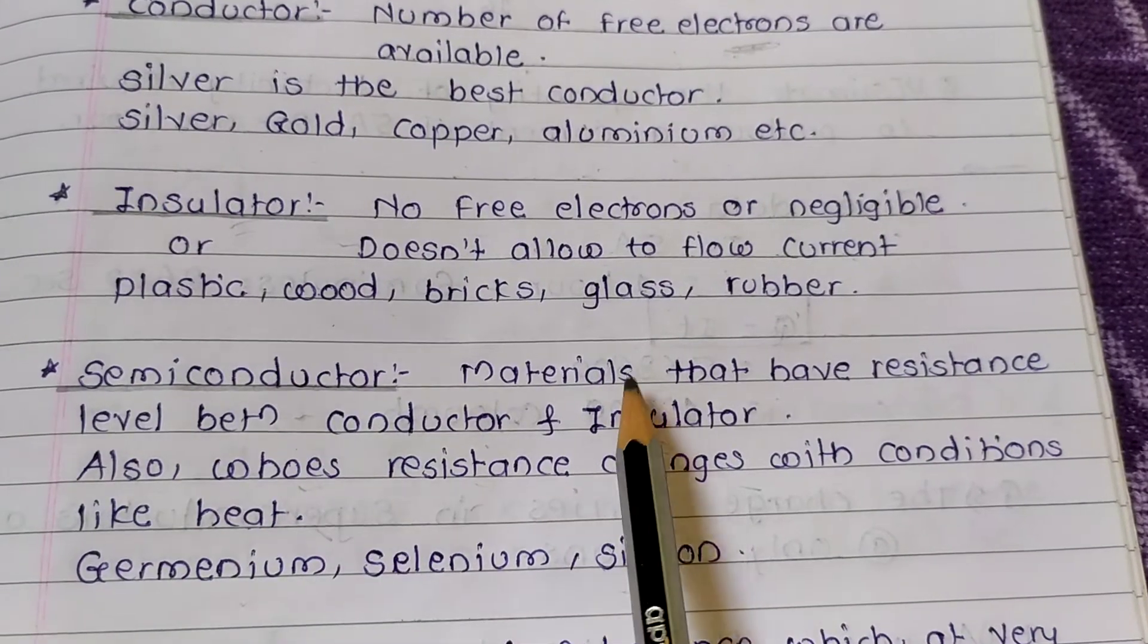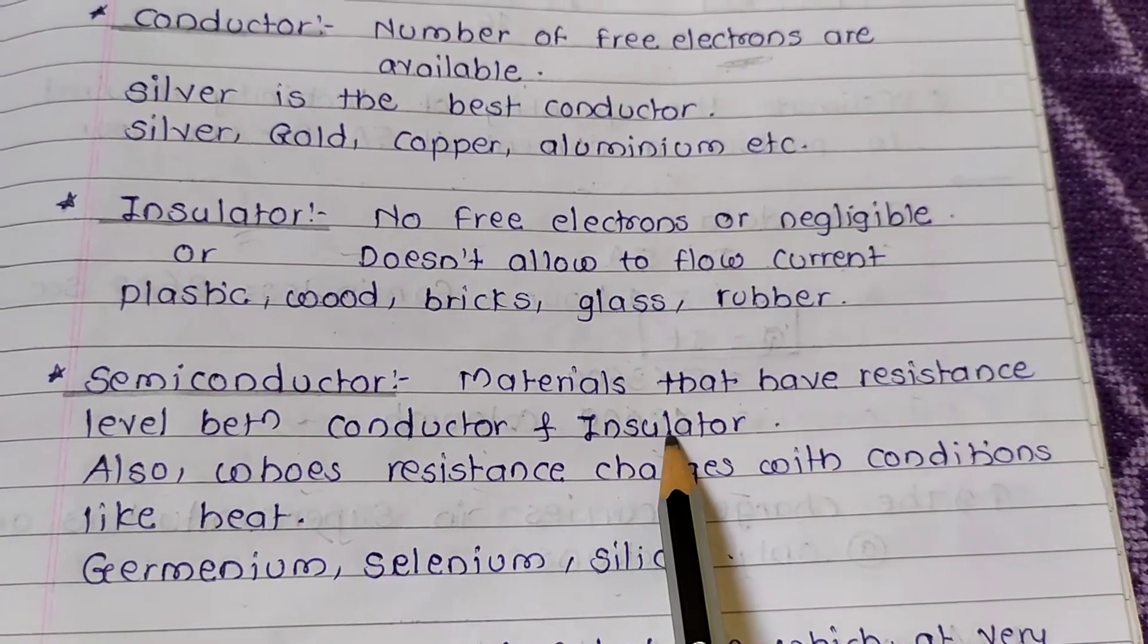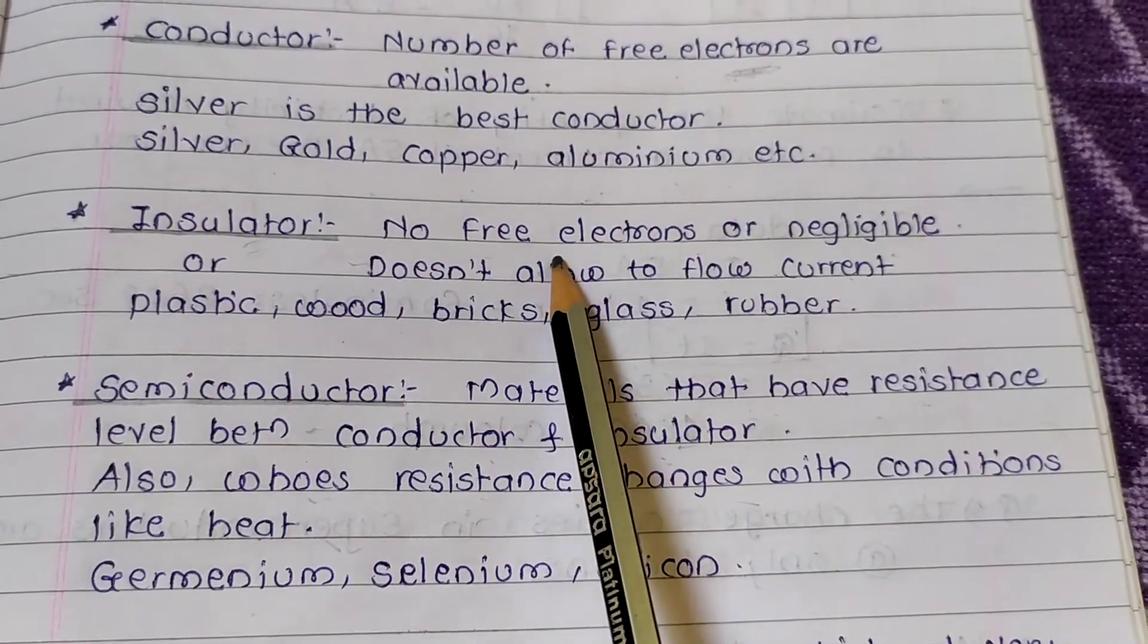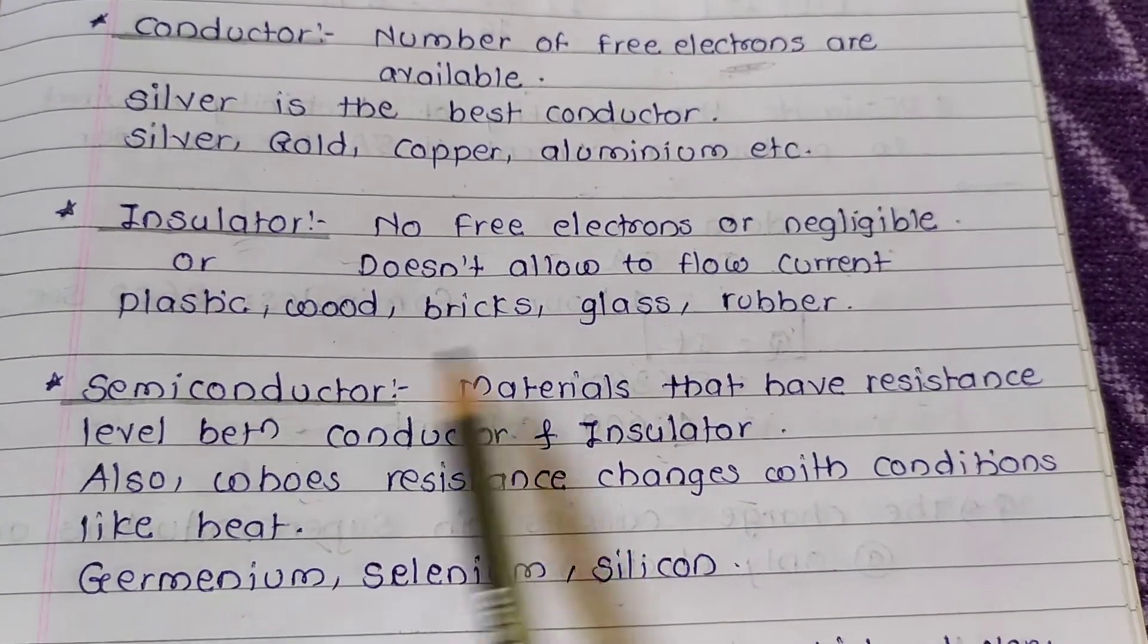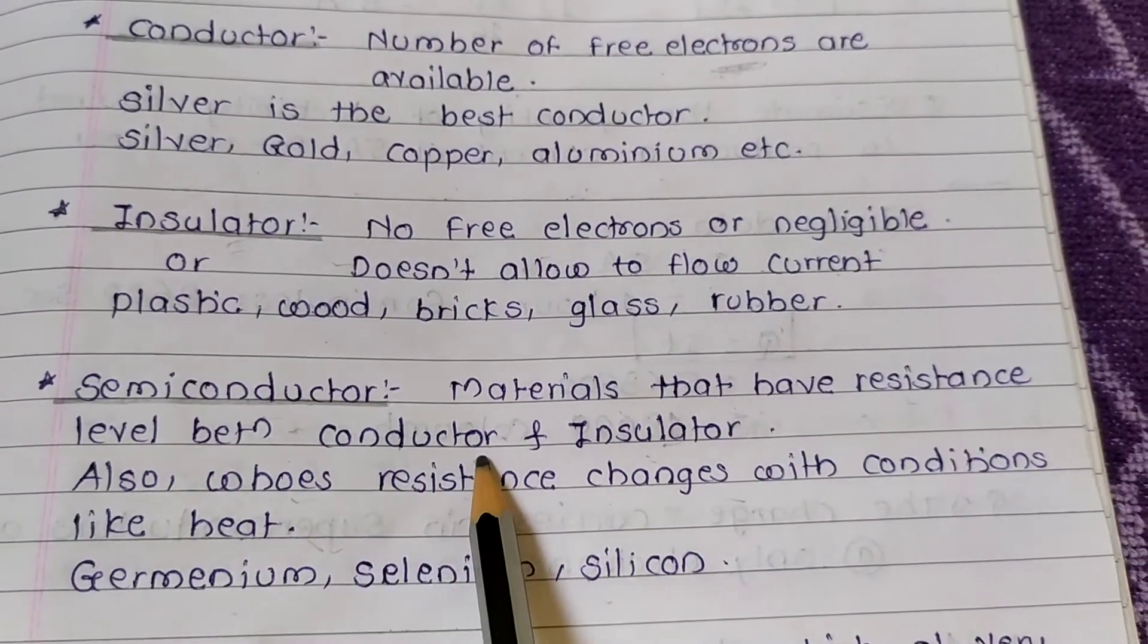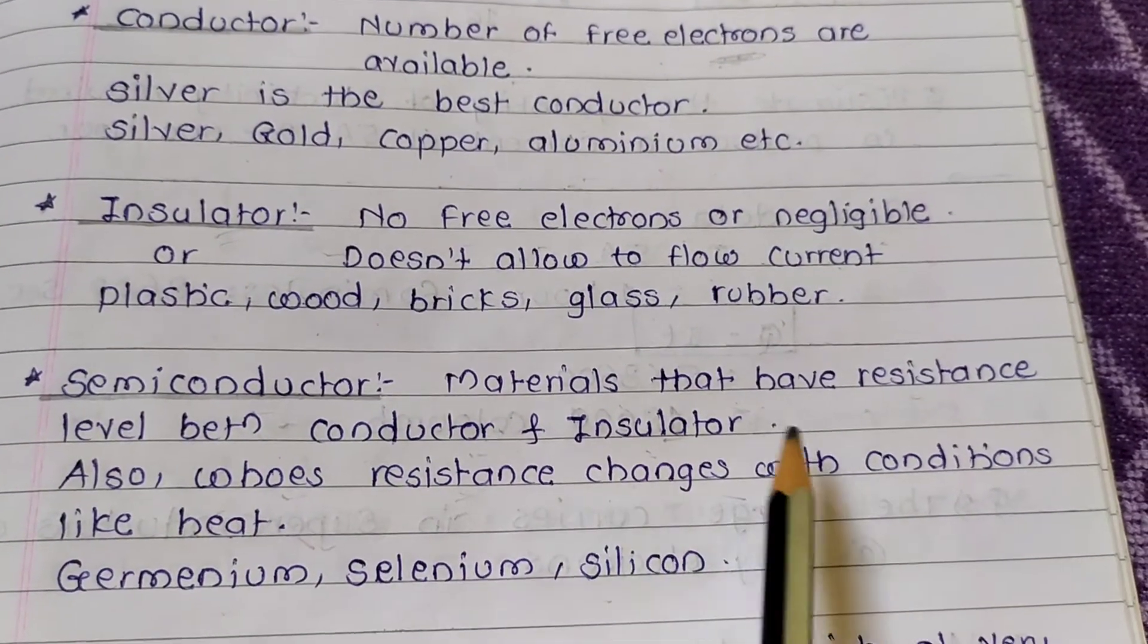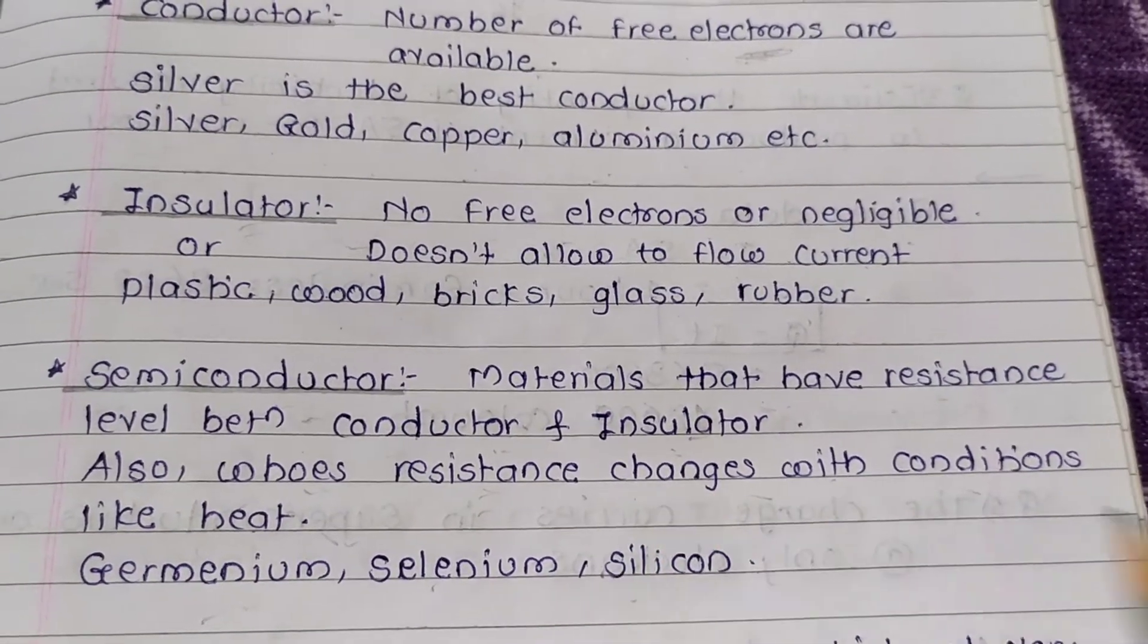Semiconductor. A material that have resistance level between conductor and insulator. Also whose resistance changes with conditions like heat. Germanium, selenium and silicon.